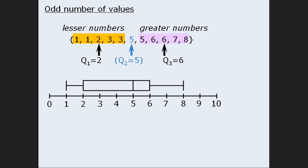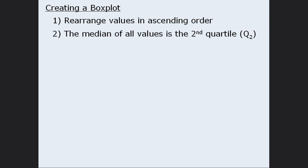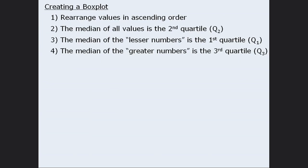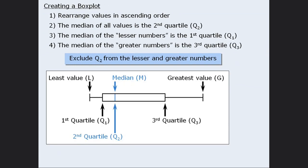Now that we have created two box plots, let's review the steps involved. First, rearrange the values in ascending order. Next, find the median of all values — this will be the second quartile. Then find the median of the lesser numbers — this will be the first quartile. Then find the median of the greater numbers — this will be the third quartile. Don't forget that in the process of finding the first and third quartiles, we must exclude the second quartile from the lesser and greater numbers. Finally, once you've found all three quartiles, draw your box plot in this format.